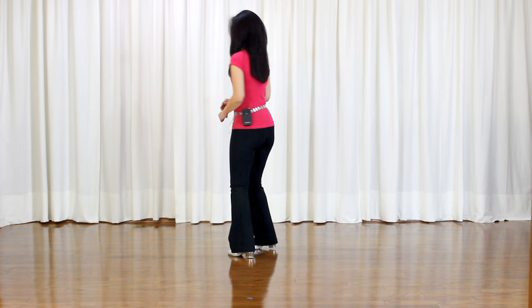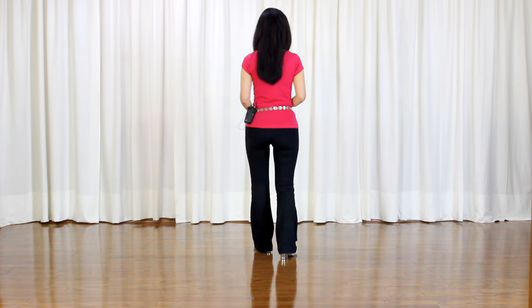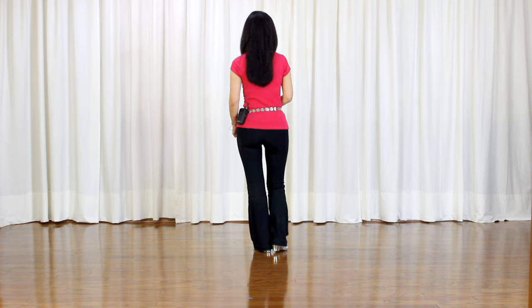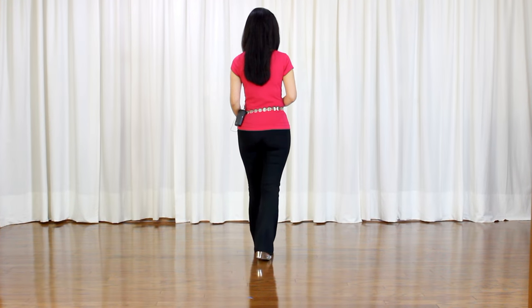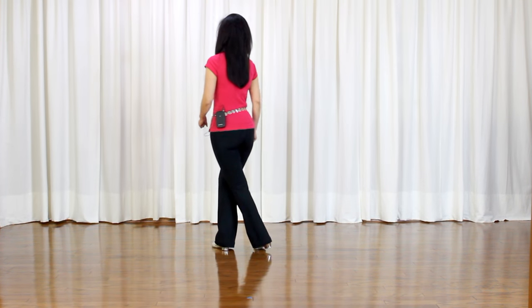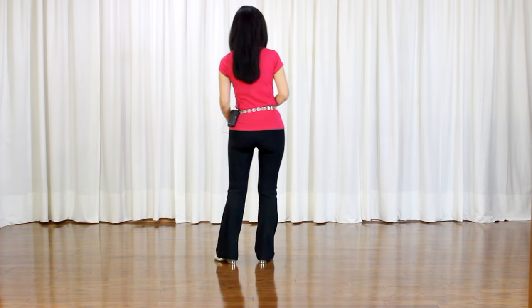On wall 5 you also dance 32 counts before you restart. You need to add a 4 count tag facing 9 o'clock. Let me show you the tag starting with the right foot. Just box: cross, back, side, forward. We count 1, 2, 3, 4.